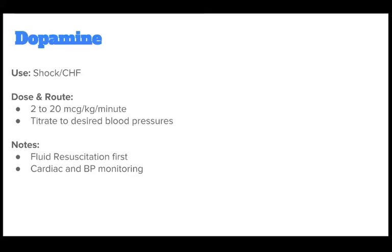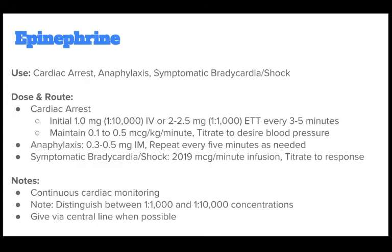Dopamine is used for shock or CHF. The correct dose and route is 2-20 mcg per kg per minute. Titrate to the desired blood pressure. Fluid resuscitation should come first, and continuous cardiac and BP monitoring is required.